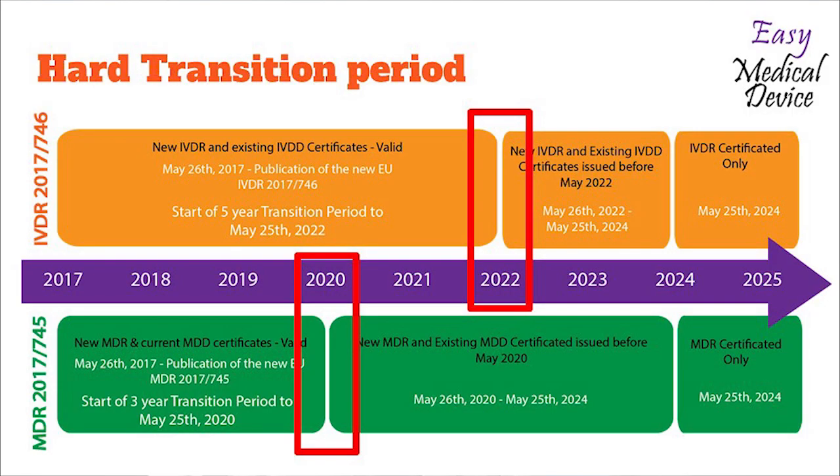For the medical device regulation transition, there are two transition dates. The first is called the hard transition and the second is called the soft transition. The hard transition starts on May 26, 2020. During this date, some companies have to transition — it's really a hard transition.